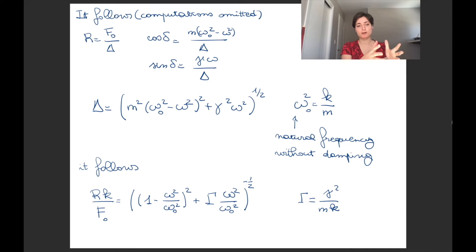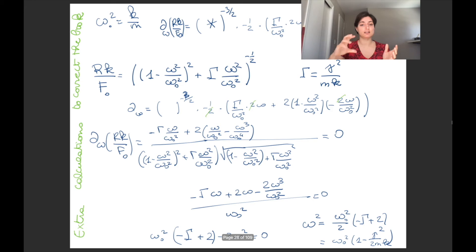And it follows that if you want to non-dimensionalize things, you divide R by F0 and multiply it by k, and that gives you a nice format of this function that is a bit messy, admittedly, but something we can still study. I just want you to look at these functions, not learn them by heart.